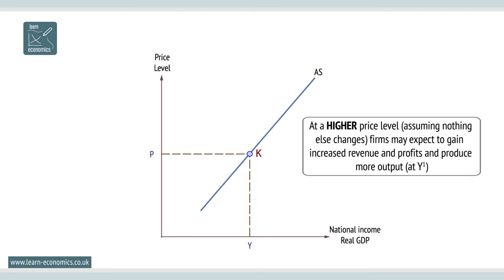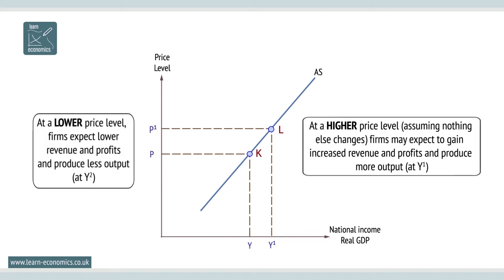Assuming nothing else changes, at higher prices, firms may expect to gain more revenue and profits and produce more output at Y1. At a lower price level, firms expect lower revenue and profits and produce less output at Y2.